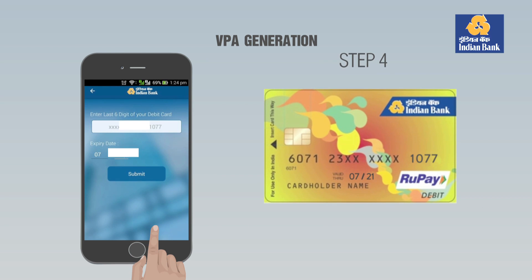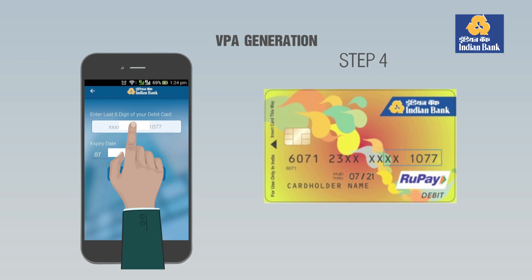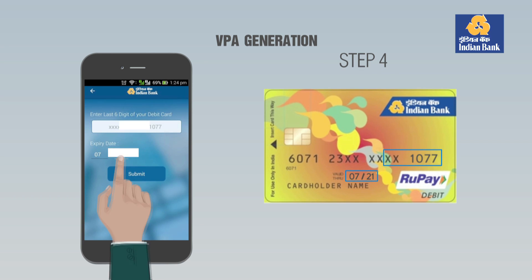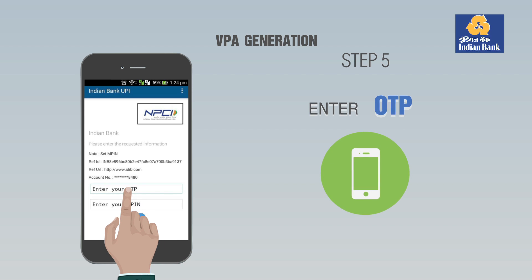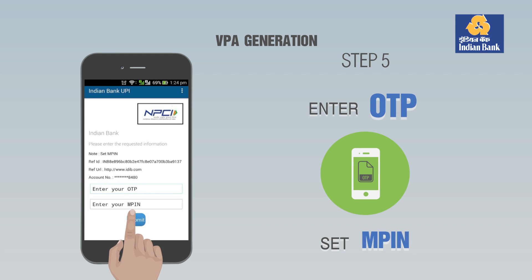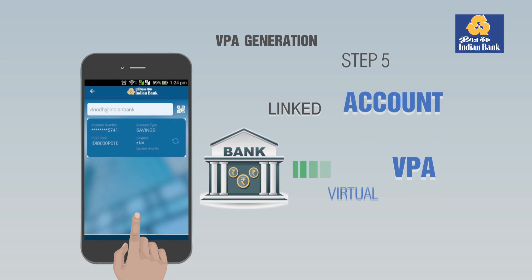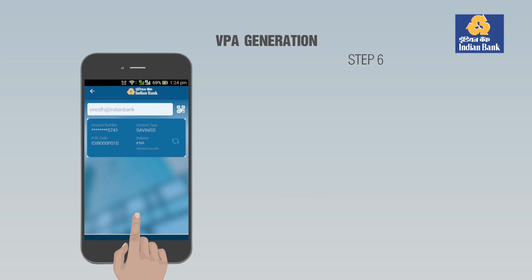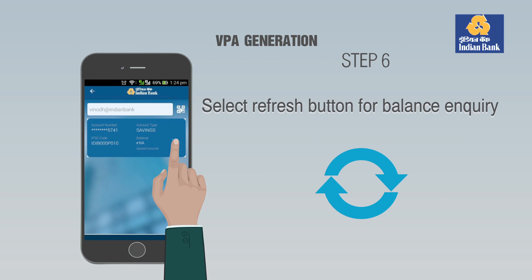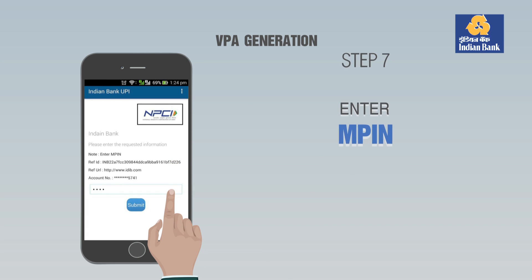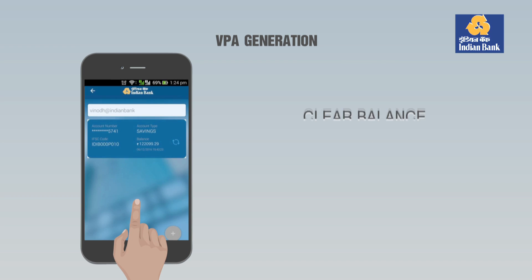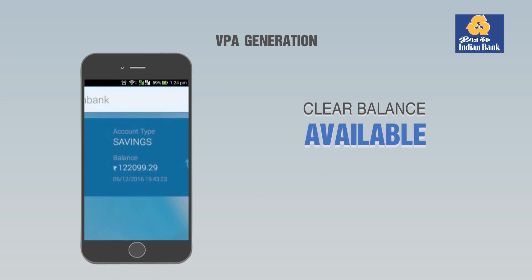Step 4: Enter the last six digits of the debit card number and expiry date for validation. Step 5: Enter the OTP sent by the bank and set the M-pin. The account is linked to the respective VPA. Step 6: Select the refresh button for balance enquiry. Step 7: Enter the M-pin for validation — the clear balance available in the account is displayed.